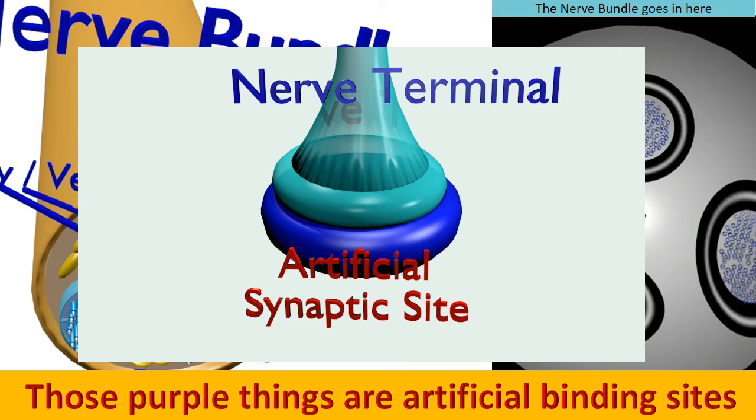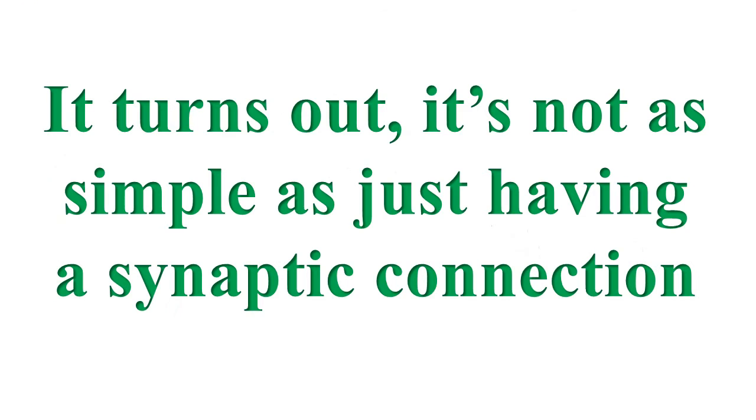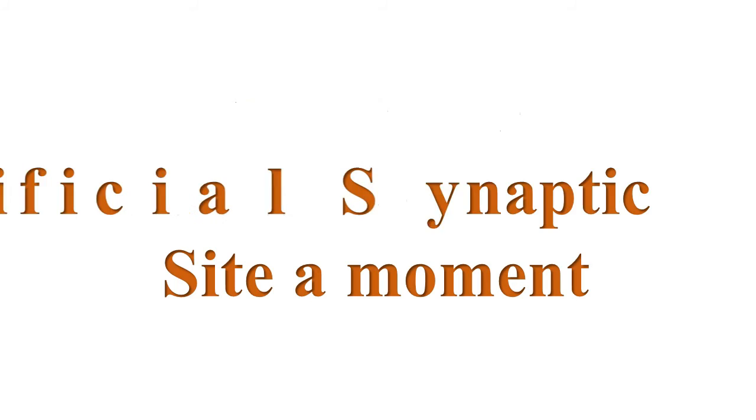With our connections in place, we should be ready to go. Well almost. This isn't quite a Houston we have a problem moment, but it turns out having a synaptic connection is only one part of the neural communication process. Returning to the image of the artificial synaptic site a moment, to get a better look at the mechanics of the signal transmission process,